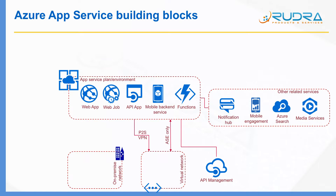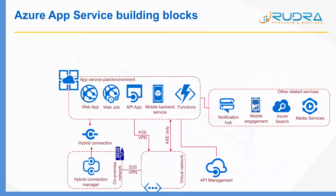There are also two ways to enable communication between apps in App Service Plan and apps hosted in your on-premises network. One way is to establish a site-to-site VPN between the virtual network and the on-premises network, so an app in App Service Plan can communicate via point-to-site VPN, through the virtual network, and via site-to-site VPN with an on-premises app. The other way is hybrid connections, where you establish a hybrid connection between the on-premises network and App Service Plan directly.